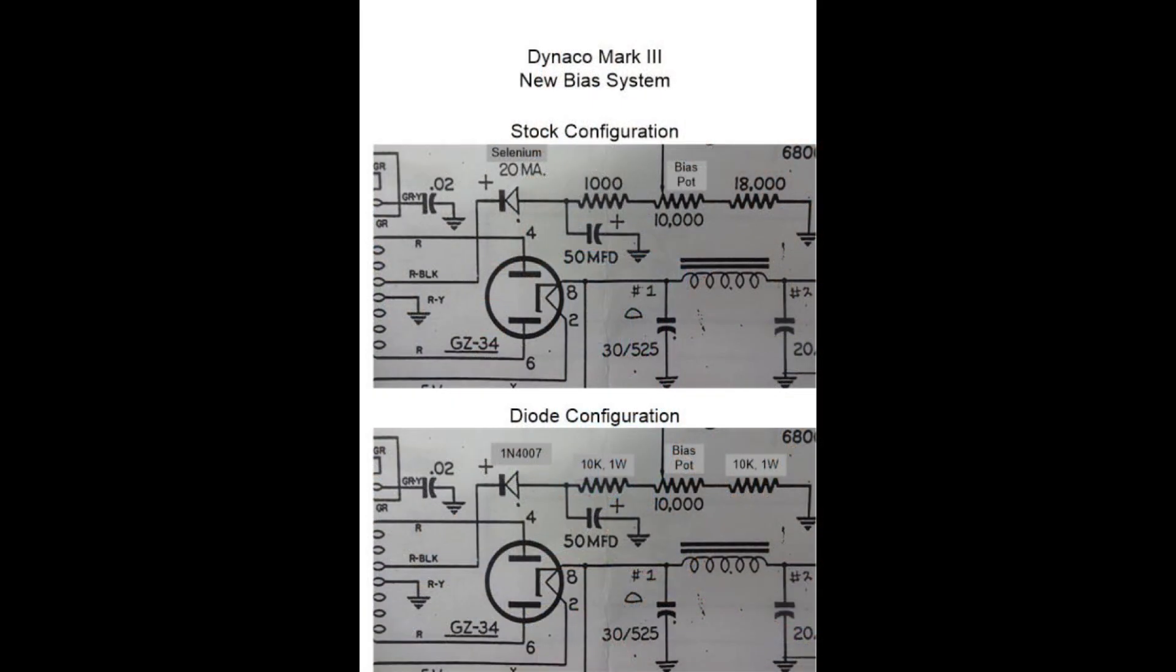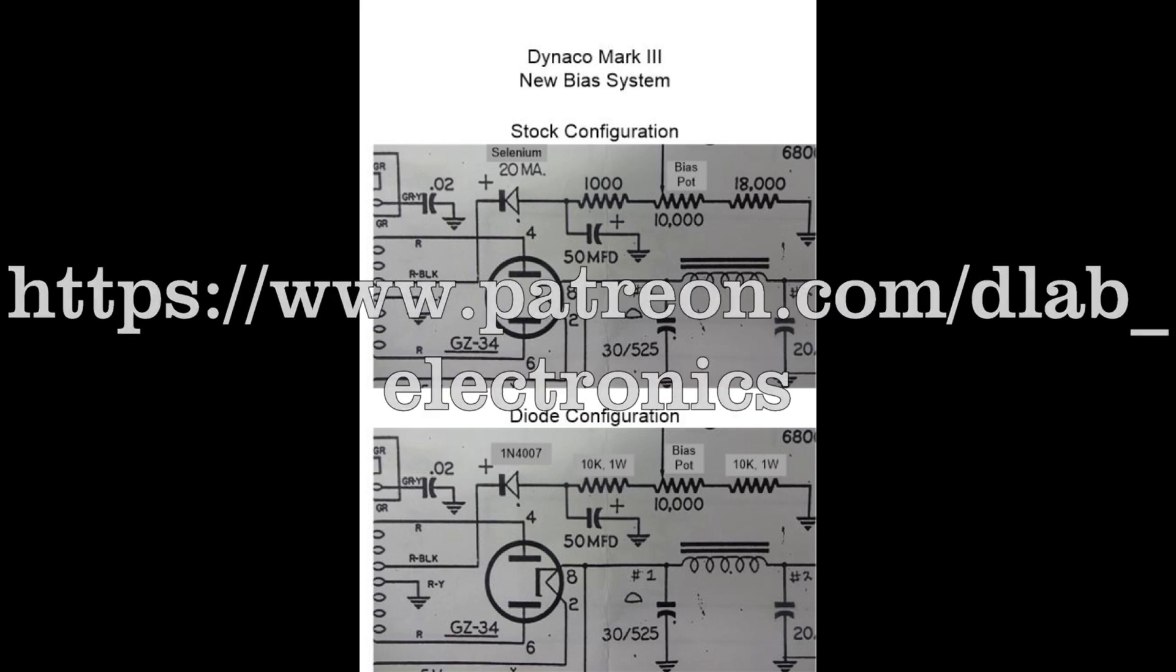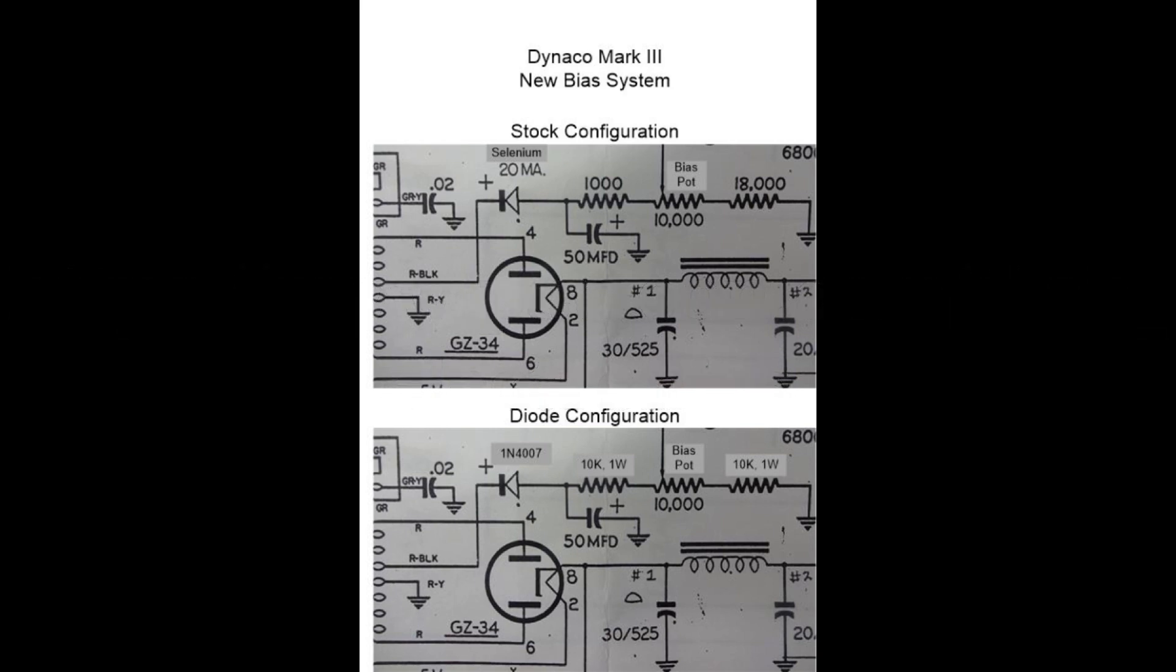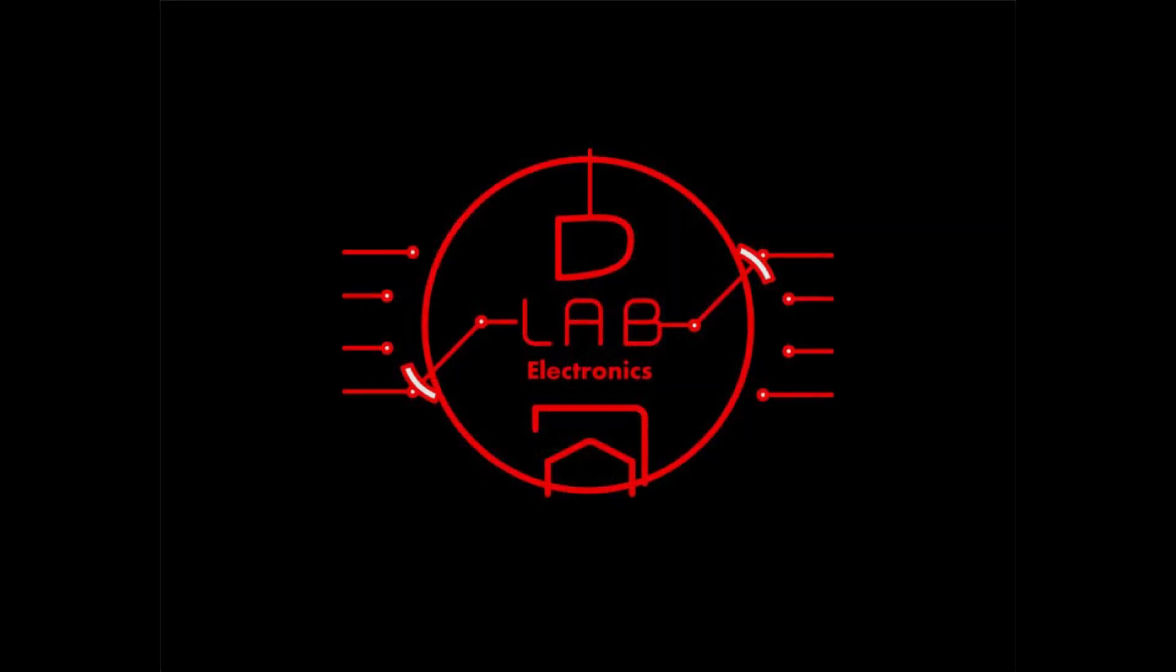Well, here is the diagram as promised. The upper picture is a stock configuration showing the selenium rectifier. And the bottom picture is the upgrade to the 1N4007 diode and the new resistor values. If you have any questions, you can drop me a line. If you need a copy of this print, shoot me an email to D-Lab Electronics.